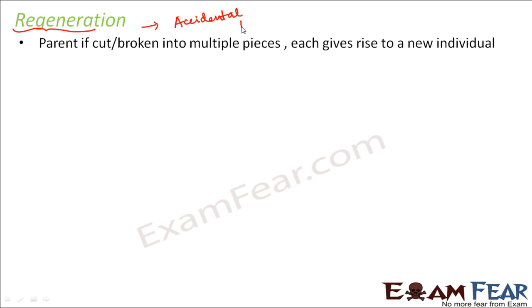What do we mean by accidental process? In fragmentation, the organism, when it becomes mature and plans to reproduce, it breaks on its own. But in the case of regeneration, the organism doesn't break on its own. If by chance, by any accident, or if somebody had cut the organism — if that way the organism gets broken into pieces — then each of those pieces is capable of giving rise to the entire organism. This process is not exactly the same as other modes of reproduction because it is quite unbelievable that an organism has to wait to be cut in order to reproduce, since it cannot cut itself on its own.